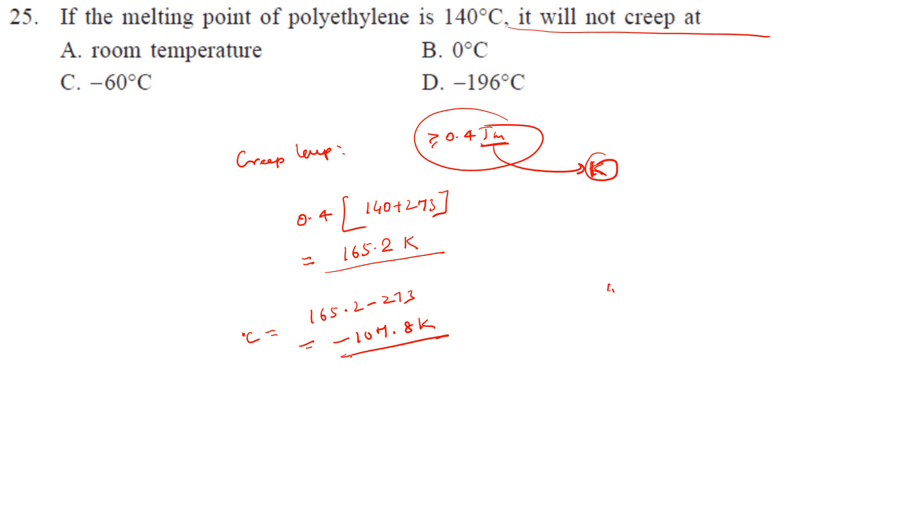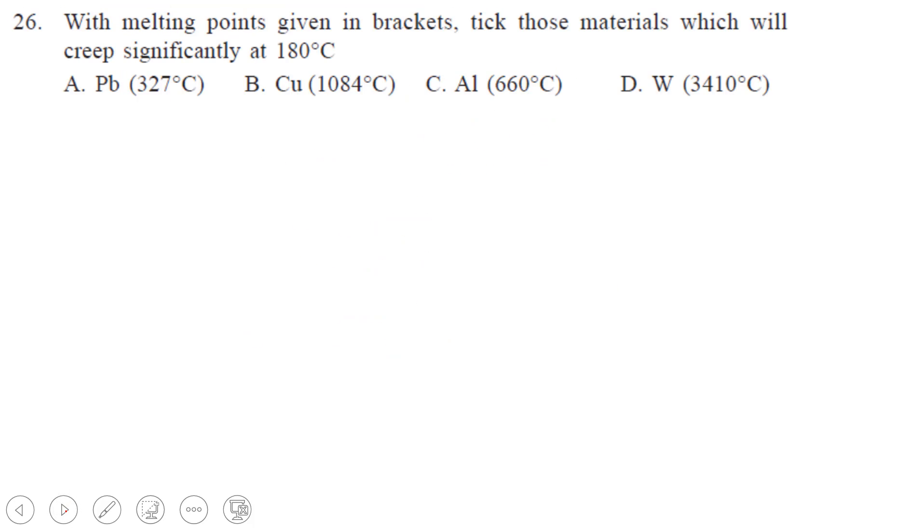This is the temperature above which creep can happen. Room temperature is above this, so creep can happen. At 0 degrees centigrade it can happen. At minus 60 it can happen. But option D is very low compared to minus 107, so here the chances of creep are very low.